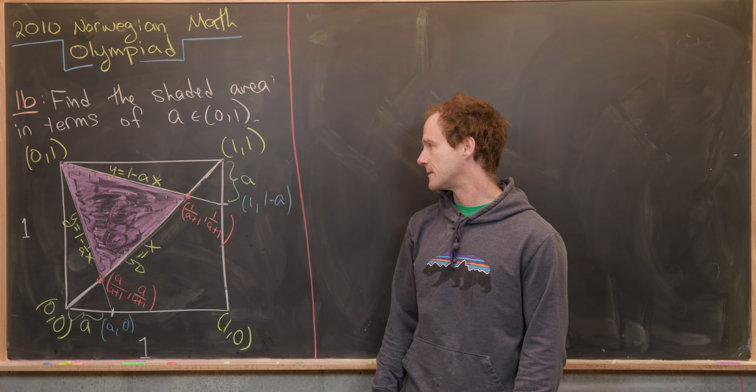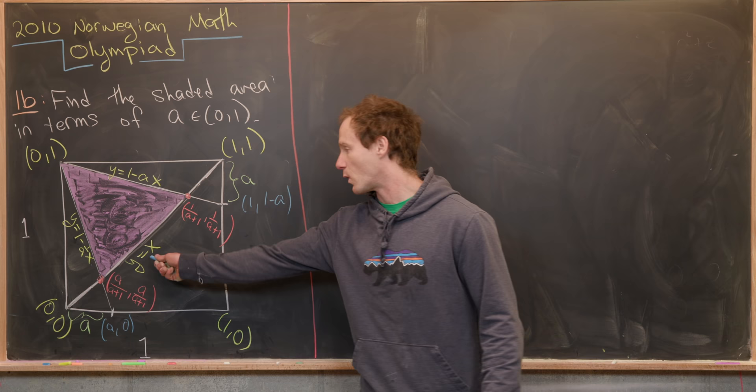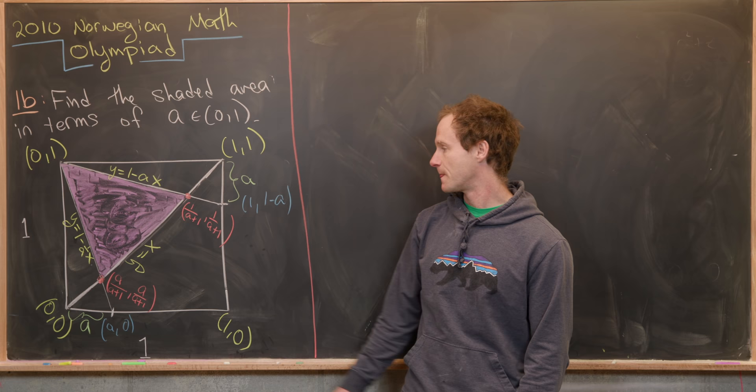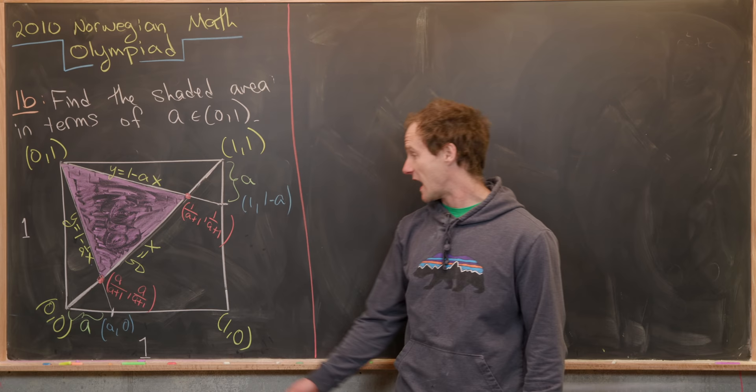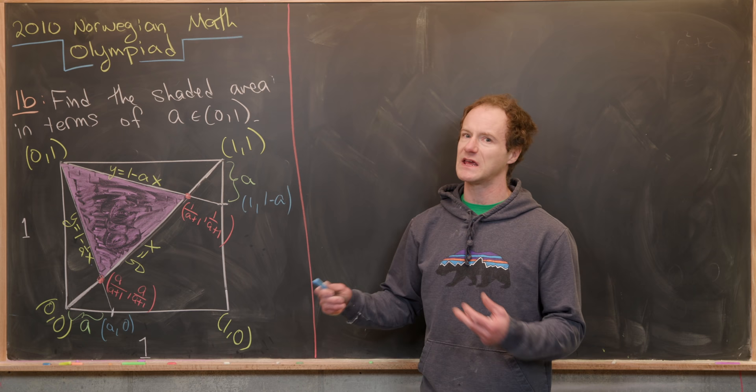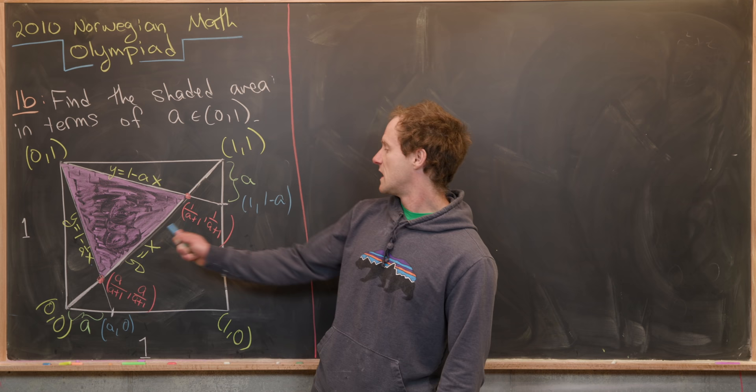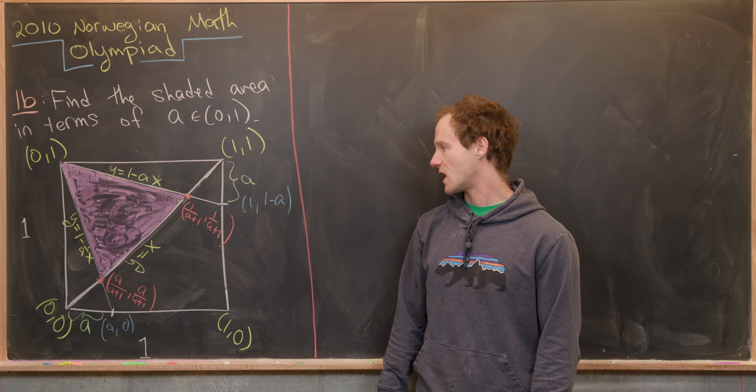Next, since this goes from 0, 0 to 1, 1, we know that's just the line Y equals X. Finally, we can find some important intersection points. So Y equals X intersects with 1 minus X over A at the point A over A plus 1, comma A over A plus 1. So again, that's pretty easy to check just with elementary algebra. And then furthermore, it intersects with this 1 minus AX line at 1 over A plus 1, comma 1 over A plus 1.